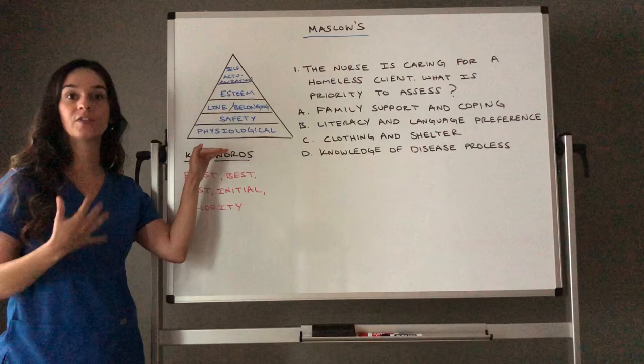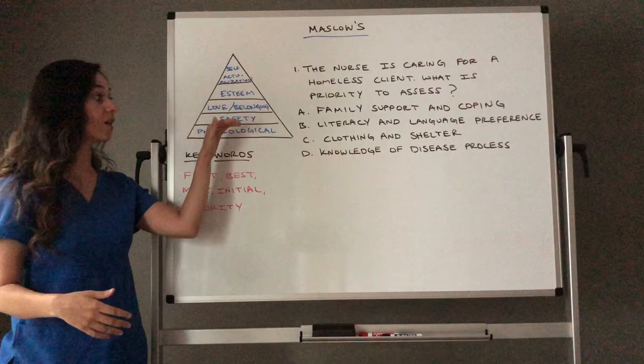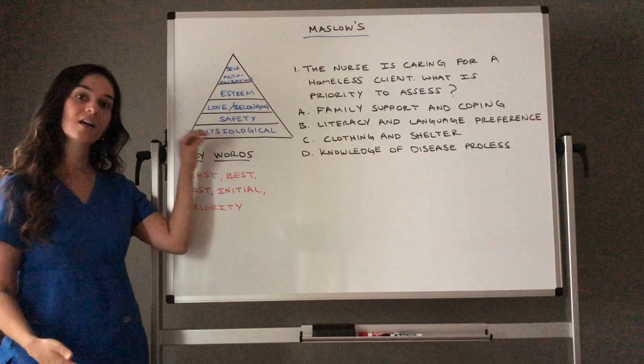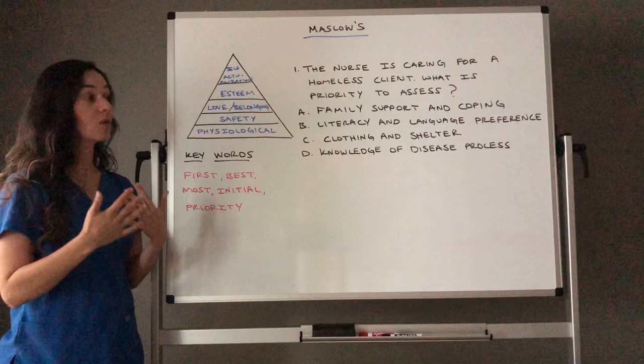Again, Maslow's stated that if we have not met our physical needs — if our body does not have food and water — how are we going to protect ourselves from our current environment or maintain our safety? You need to meet the needs at the bottom of the pyramid prior to going up higher.